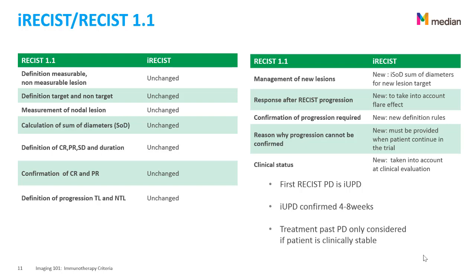Confirmation of progression is required in iRECIST. If no confirmation is possible, the reason has to be stated. If the patient is classified as IUPD (Unconfirmed Progressive Disease) and there is no new imaging done, or the patient dies, or the patient is not clinically stable to continue the trial, then the reason why the progression cannot be confirmed has to be recorded and reported by the reader. The important point here is that patients can only stay in the trial if they are clinically stable. In iRECIST, the IUPD has to be confirmed within 4 to 8 weeks after the IUPD time point.